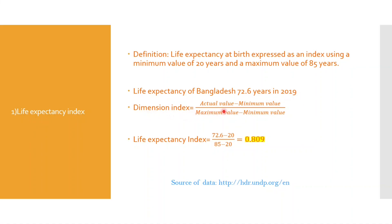The formula is: actual value minus minimum value, divided by maximum value minus minimum value. So that is 72.6 minus 20, divided by 85 minus 20. Putting the values into the formula, we get a result of 0.809. This is the Life Expectancy Index for Bangladesh.